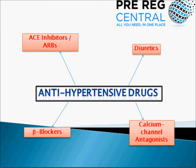The second class of drugs which we will discuss are the beta blockers. These block the sympathetic pathway and thus reduce cardiac output, resulting in a lower blood pressure. These drugs end with 'lol' — for example bisoprolol, atenolol and propranolol.